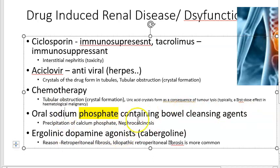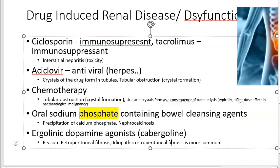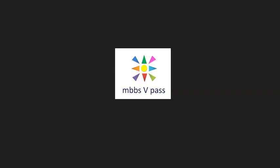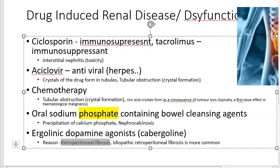Sodium phosphate-containing bowel cleansing agents cause precipitation of calcium phosphate, leading to nephrocalcinosis — essentially a kidney stone-type condition. An orthopedic tip: calcium supplements are better taken in the morning with lots of water to reduce the risk of kidney stones. Cabergoline causes retroperitoneal fibrosis — the kidney is a retroperitoneal organ, though they specifically mention fibrosis here.